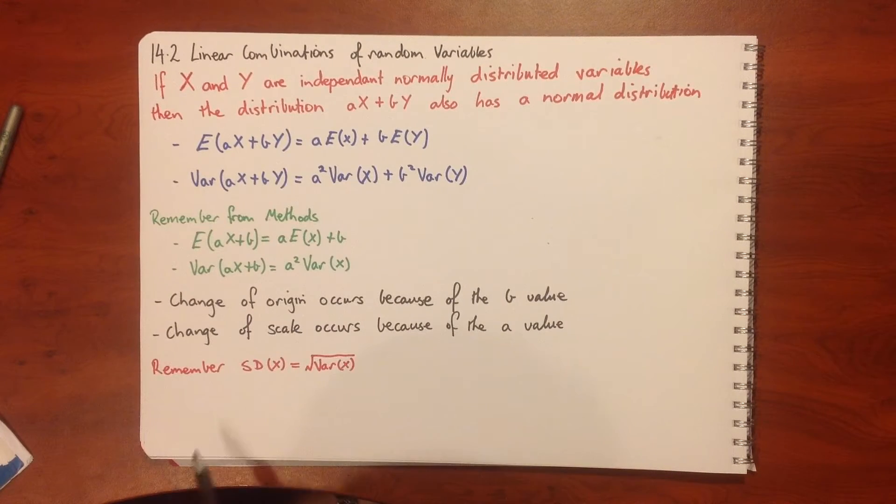Changing our scale occurs because of the a value, which is like a dilation. We also need to remember that our standard deviation of x is equal to the square root of the variance of x.